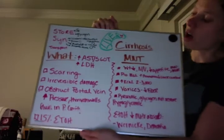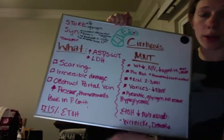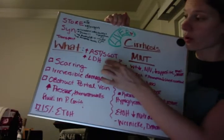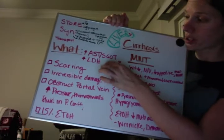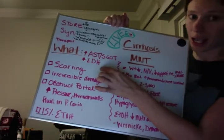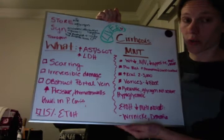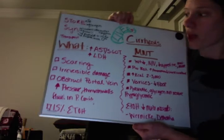Cirrhosis of the liver. Our lab values to look for are increased SGOT or increased LDH. Those are some of our indicators of cirrhosis.